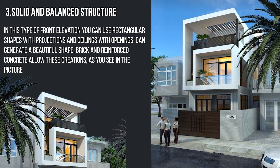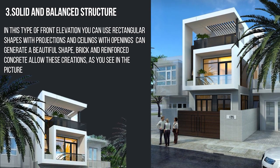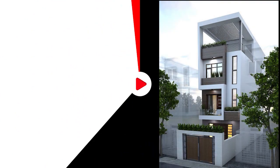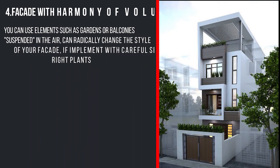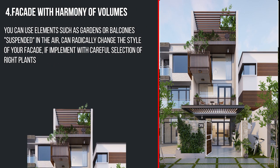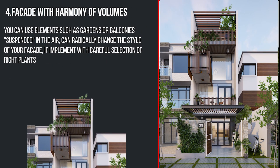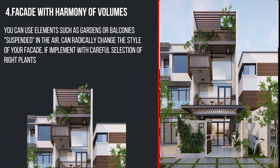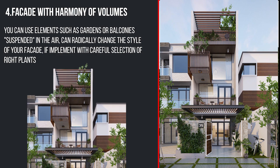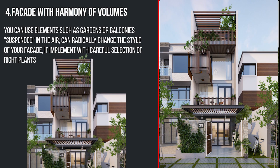The fourth one is facade with harmony of volumes. You can use elements such as gardens or balconies suspended in air, which can radically change the style of your facade if implemented with careful selection of the right plans.